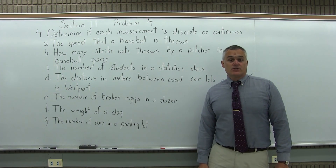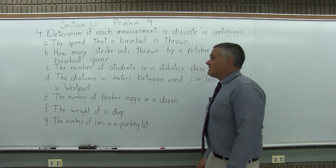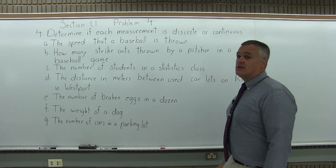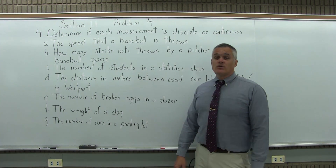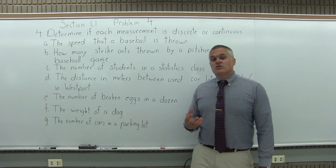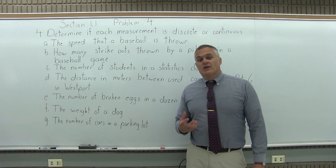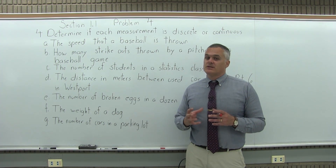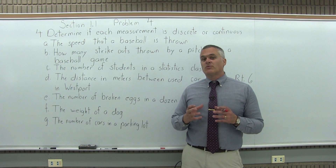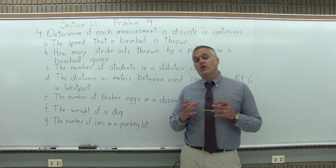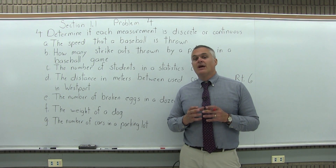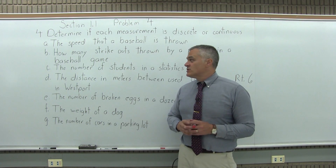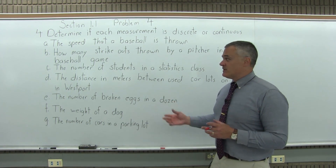This is Section 1.1, Problem 4. It says: determine if each measurement is discrete or continuous. So in other words, if the number of answers you're getting can always have an answer in between those, that makes it continuous. But if you can find certain numbers where you cannot have an answer in between, that makes it discrete. So that's what we have to decide for each one of these.